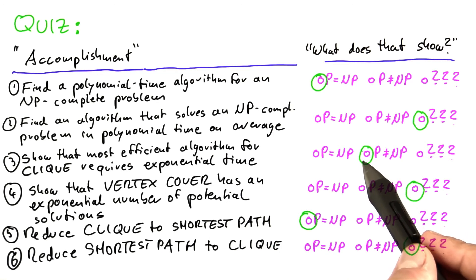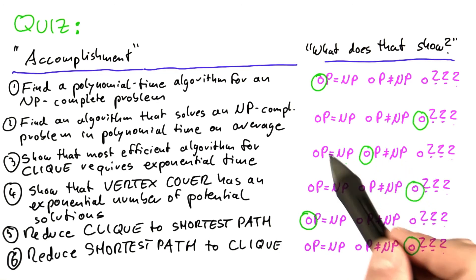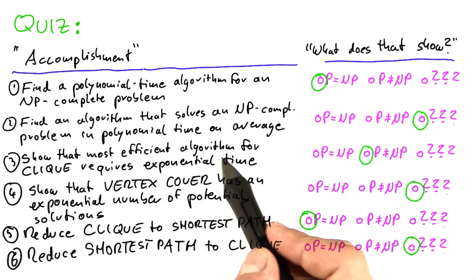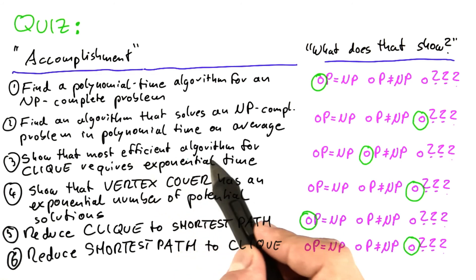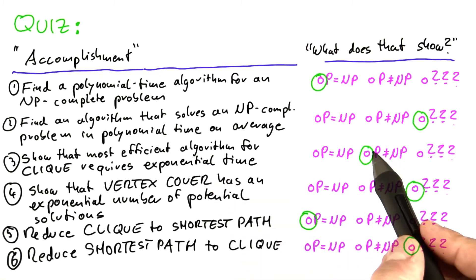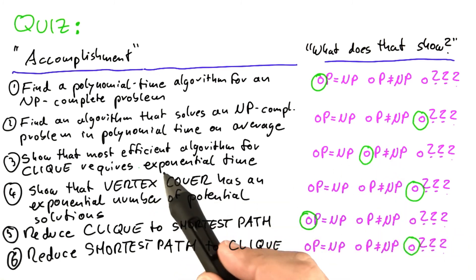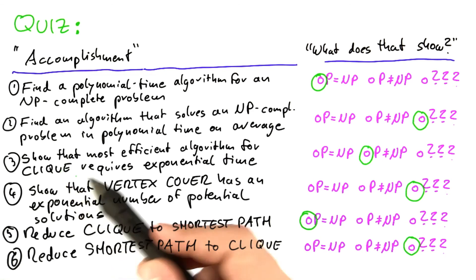On the other hand, if you want to show that P does not equal NP, then you have to put in a lot of work, because you have to consider any possible algorithm, no matter how complex, how intelligent, how sophisticated, and still somehow make the case that this algorithm is not able to solve a problem like clique in polynomial time.